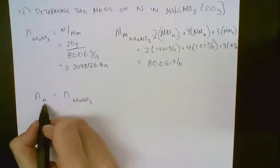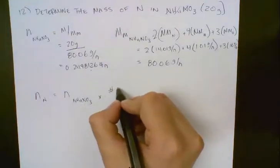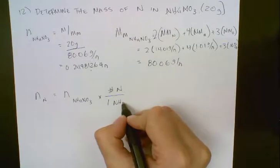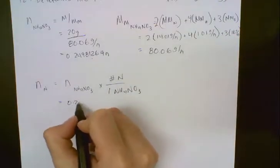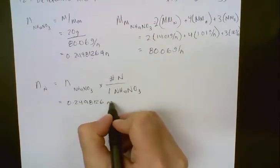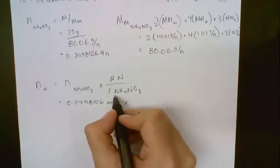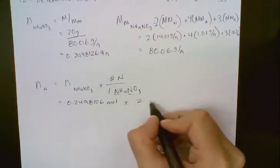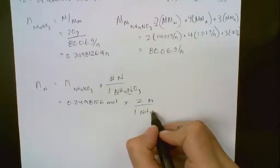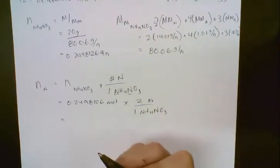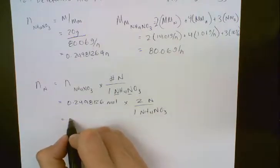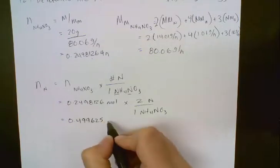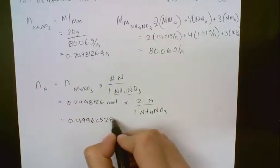We want to figure out moles of nitrogen, but we only know moles of ammonium nitrate. So we're going to multiply that by how many nitrogen we have in any 1 NH₄NO₃. We know we have 0.24981264 moles of NH₄NO₃, and we multiply that by 2 nitrogen in any 1 NH₄NO₃. So we're going to have twice as many moles of nitrogen as ammonium nitrate — that works out to 0.499625281 moles.